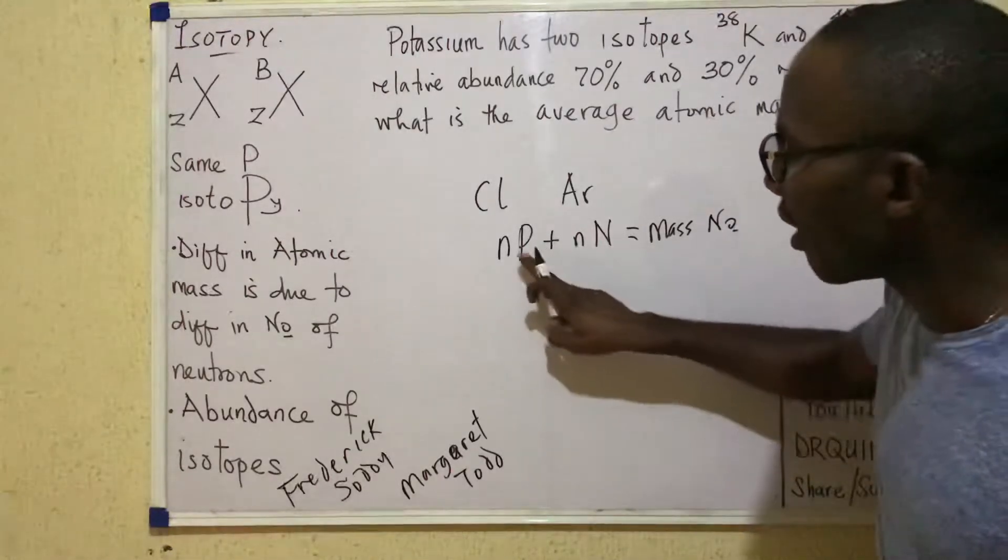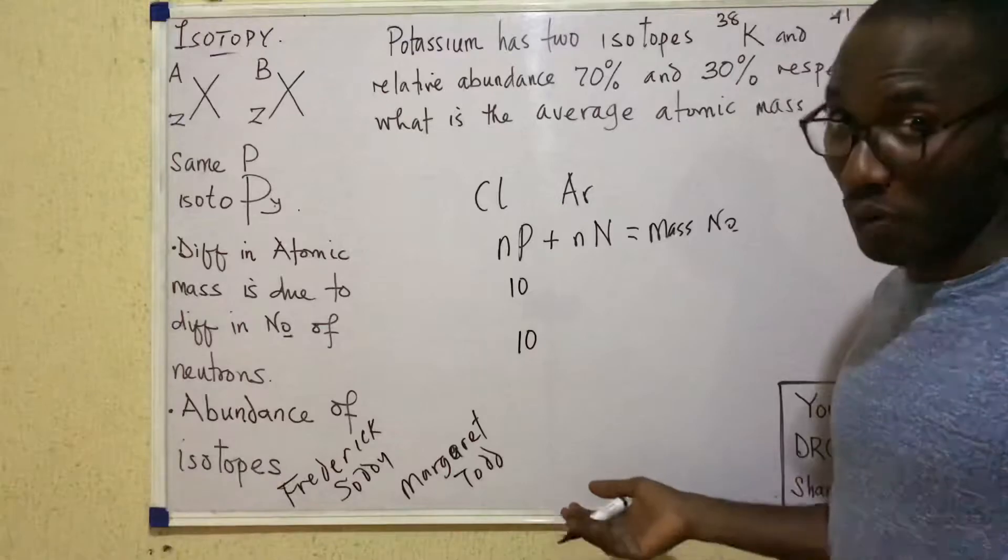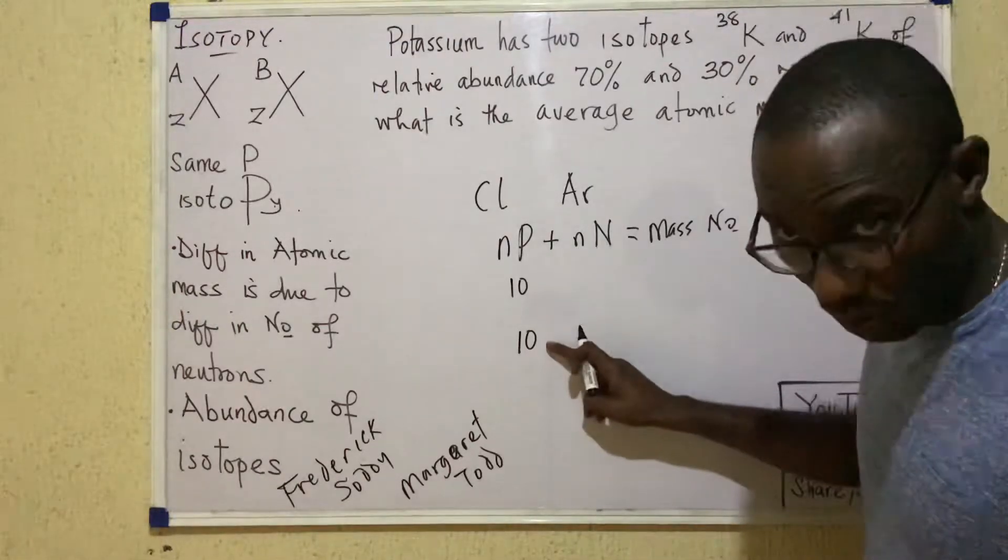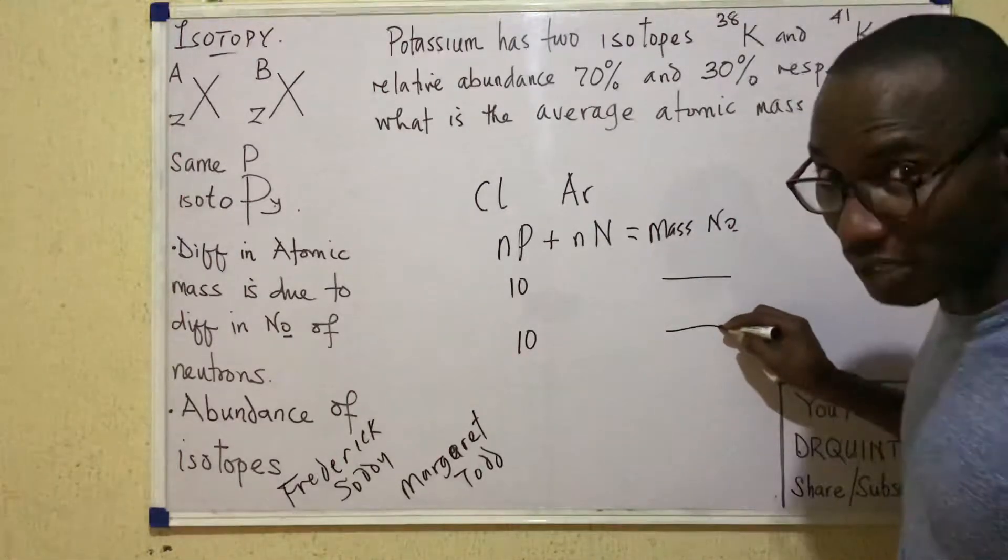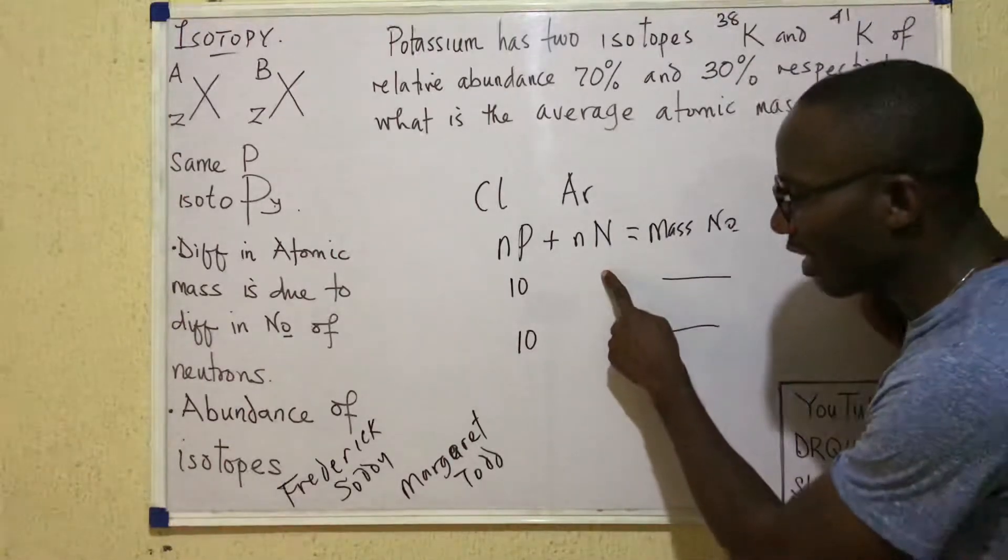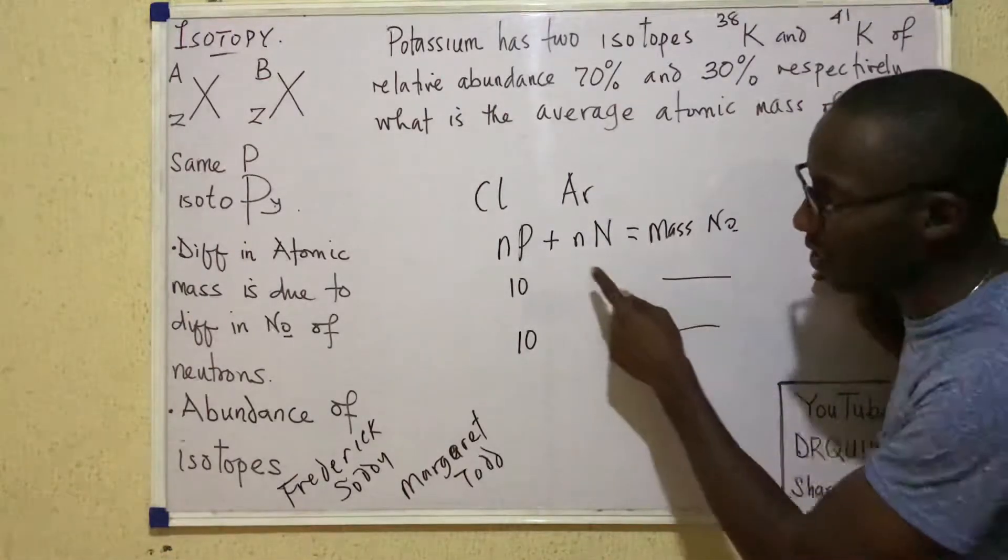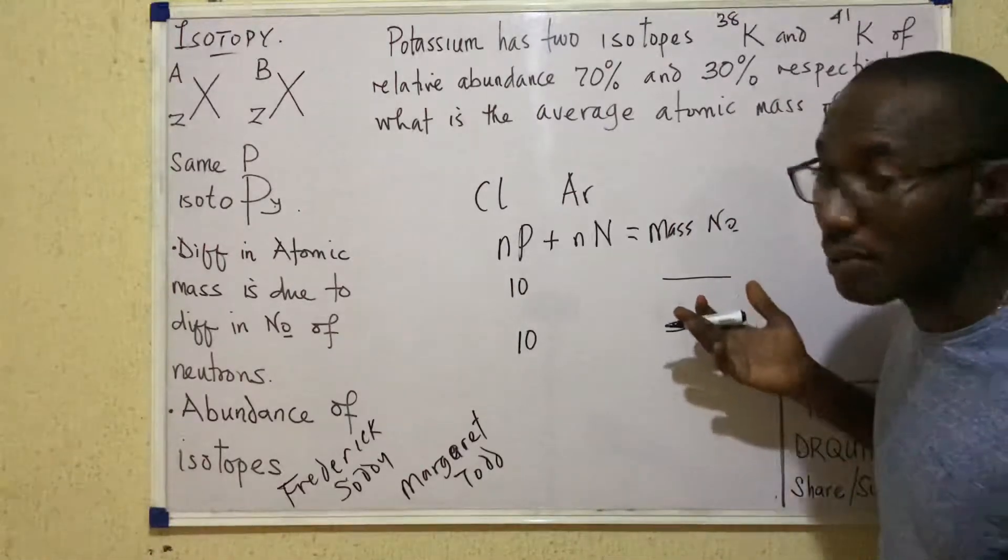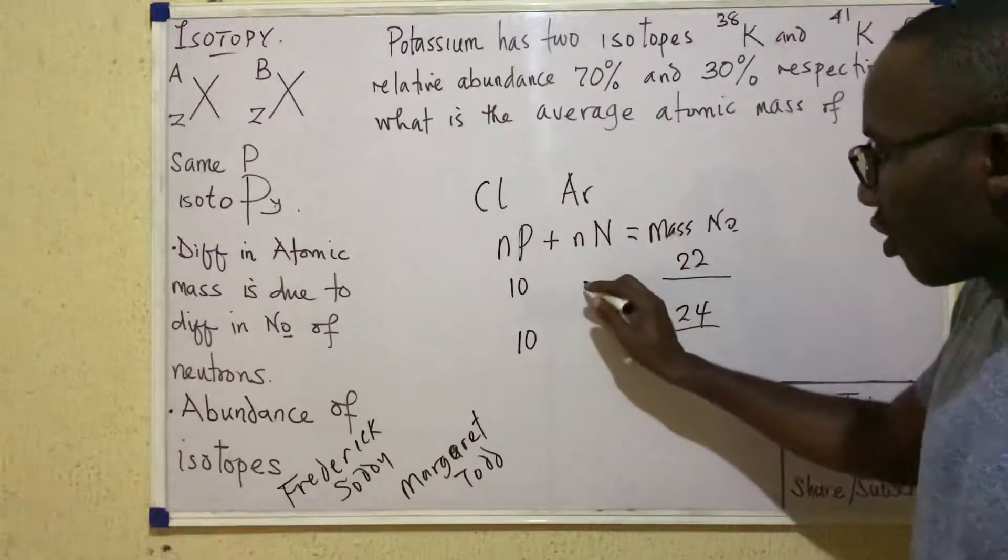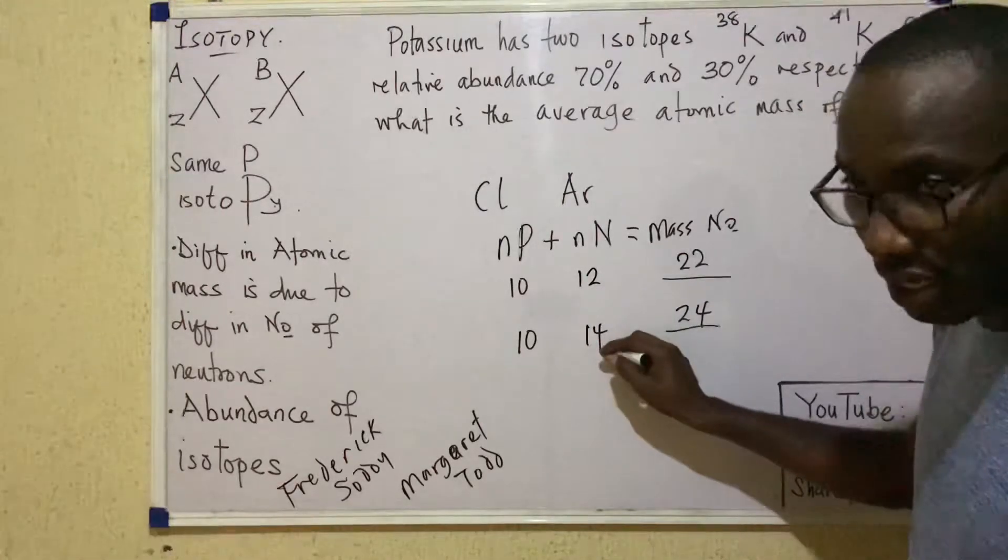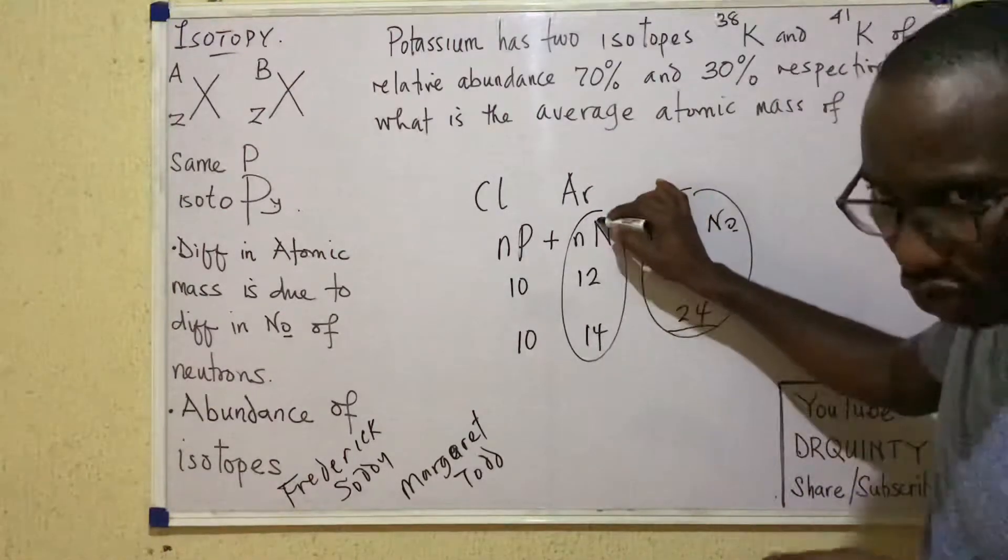So look at this. If I have ten protons and another person has ten protons, assuming we were atoms, so we have the same number of protons now. Now, if it ends up being that my mass number is different from that person's mass number, it would in effect mean that our number of neutrons are different. Because that's the only way our mass numbers would be different since our number of protons are already the same. So if, for example, my mass number is twenty-two and this person's is twenty-four, then when you calculate our number of neutrons, you'll get twelve and fourteen.